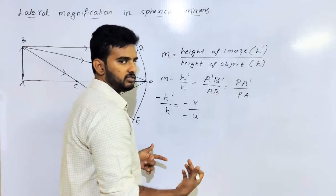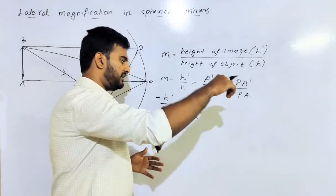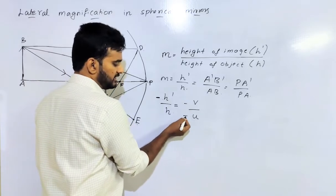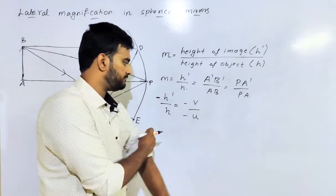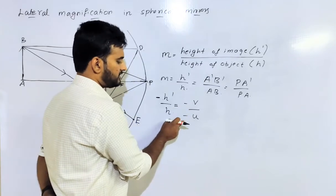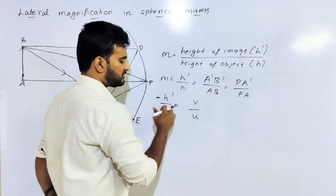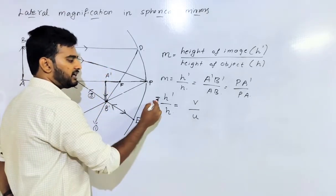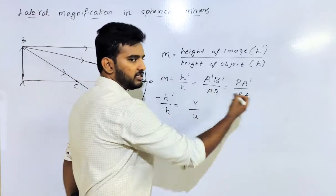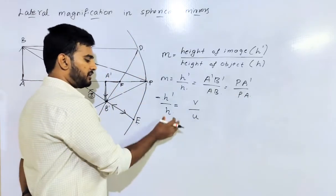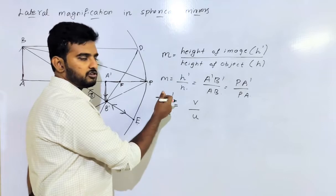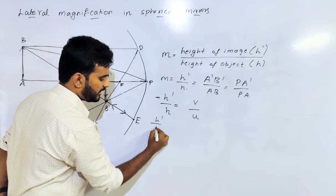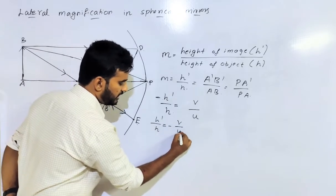So we have minus V and minus U. How is it positive or negative? Let's learn from the previous equation. This minus and this minus — automatically, minus minus is cancelled. Now H dash is a minus on the left hand side. So H dash divided by H equals to minus V by U.